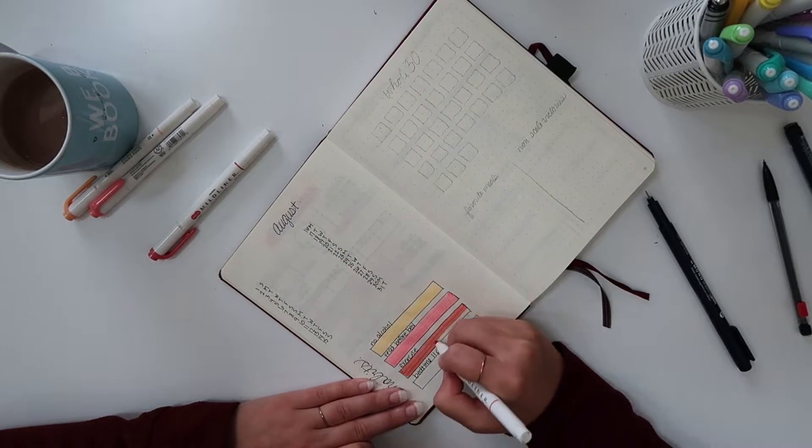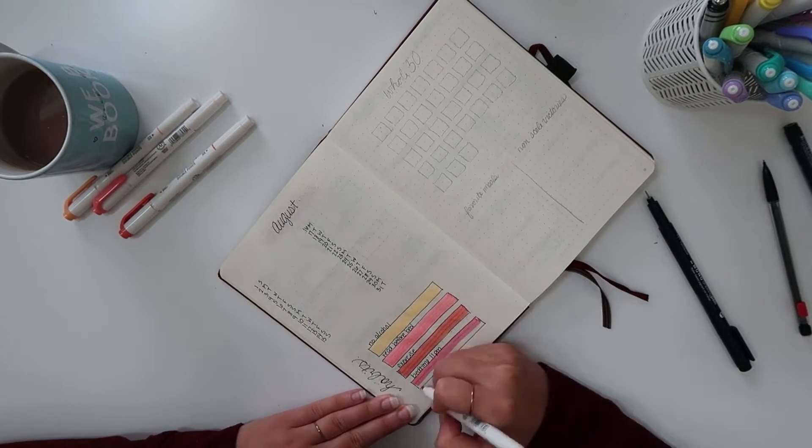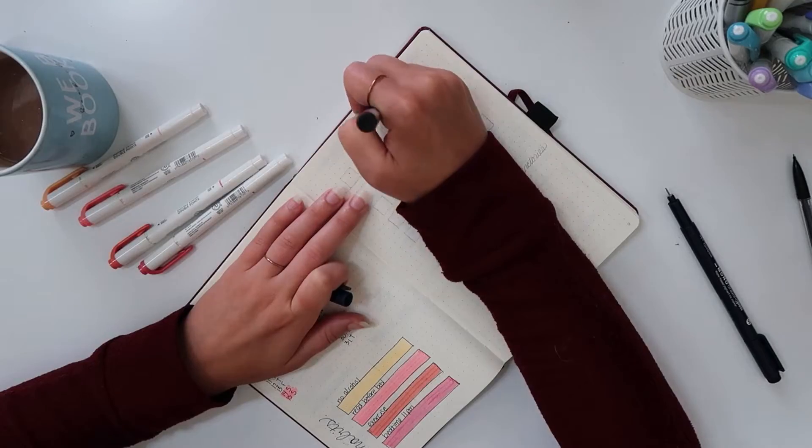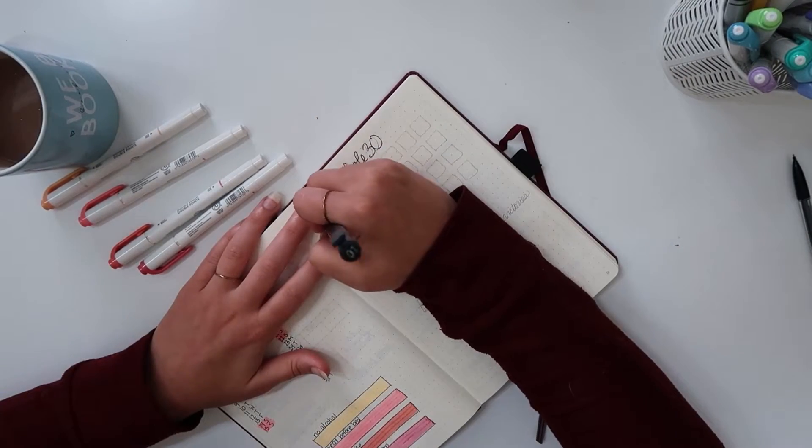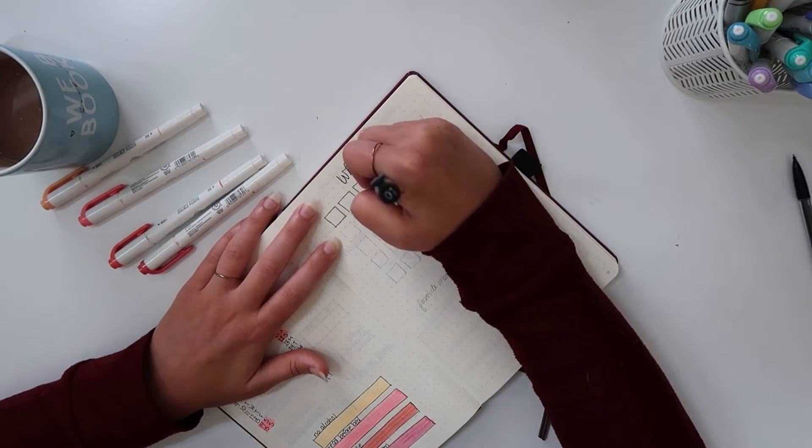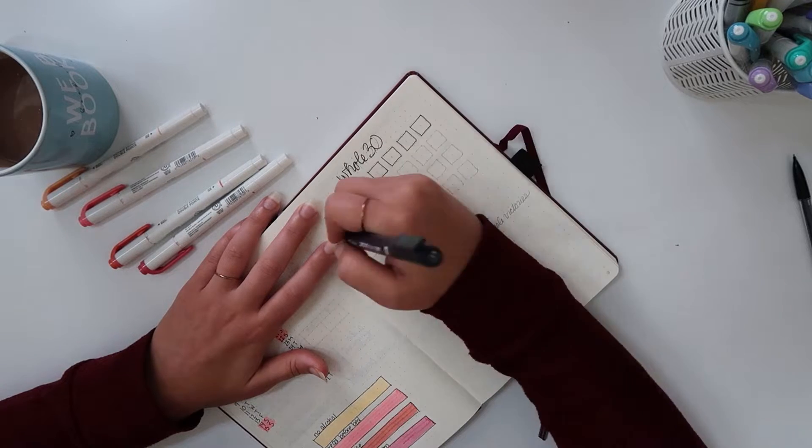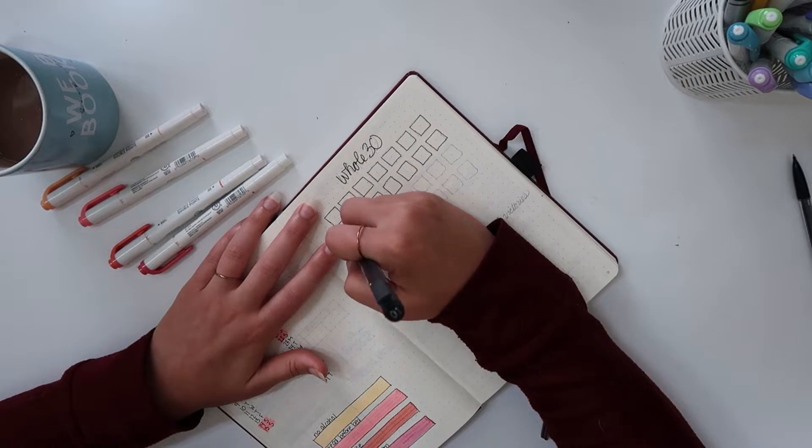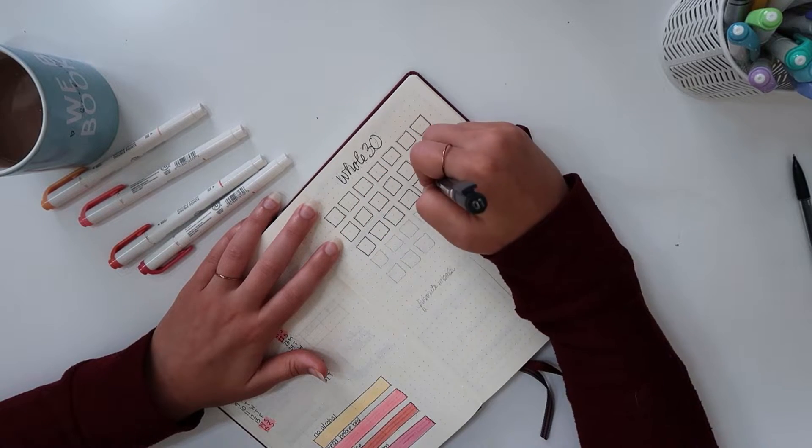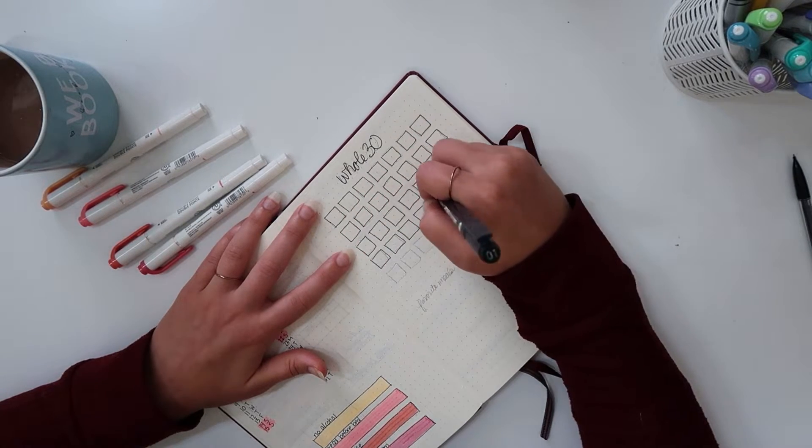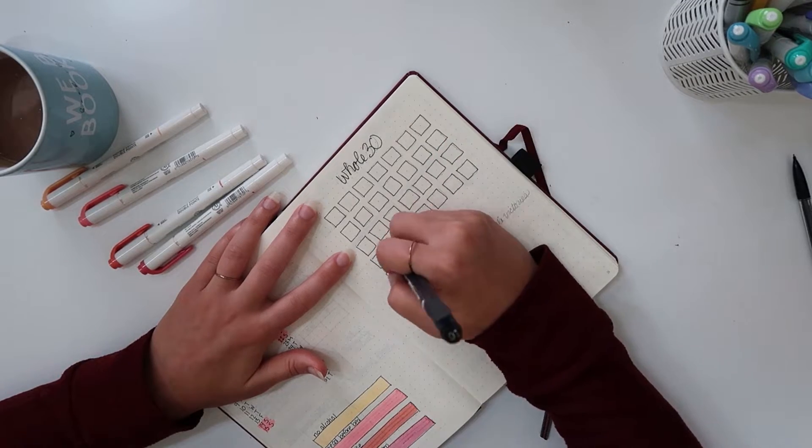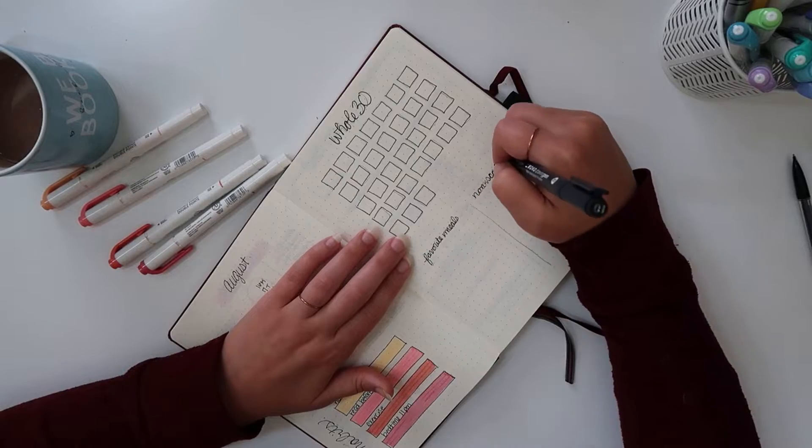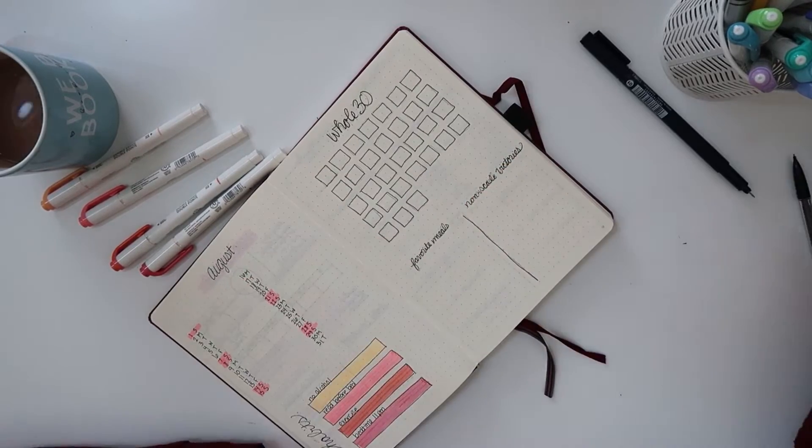Then like I said I'm doing a Whole 30. This is a food diet challenge thing so you take out a bunch of processed foods, you take out gluten and dairy, alcohol and sugar and legumes and all this stuff just so that way you can focus on really whole foods. I've done it multiple times. I'm doing it to get my eating back on schedule and I figured I would just cross off the days that I actually complete it and then I can write my favorite meals and non-scale victories.